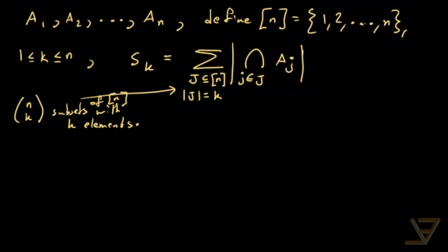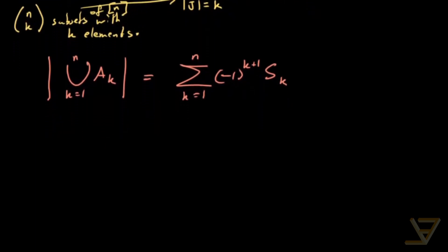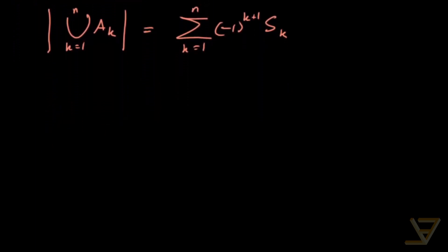So then what the general pattern is, is that the union of the ak, for k equals 1 through n, is equal to the alternating sum of the Sk's, where k ranges from 1 through n. That's the general pattern. And I'm not gonna prove it right here, because it's a bit involved. The argument is not too difficult, but it is involved, so I'm not gonna do it right now.